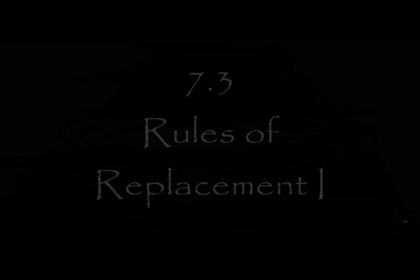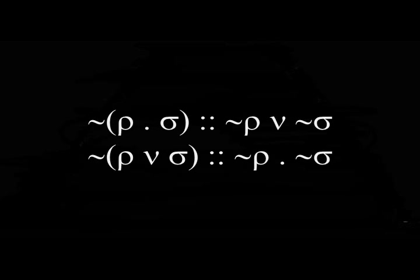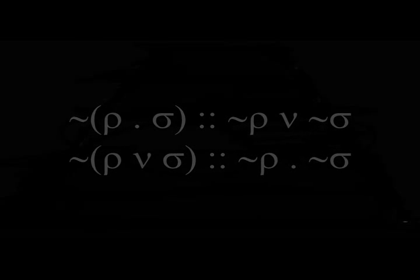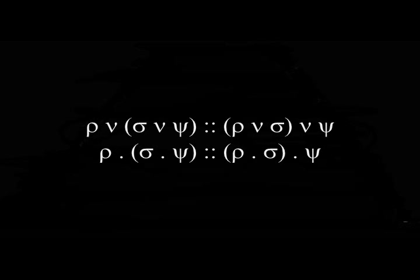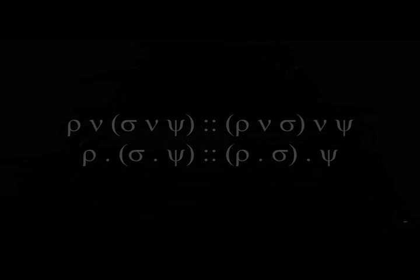In this section, we'll be discussing the first set of rules of replacement in 7.3: DeMorgan's Rule, Commutativity, Associativity, and Distribution.